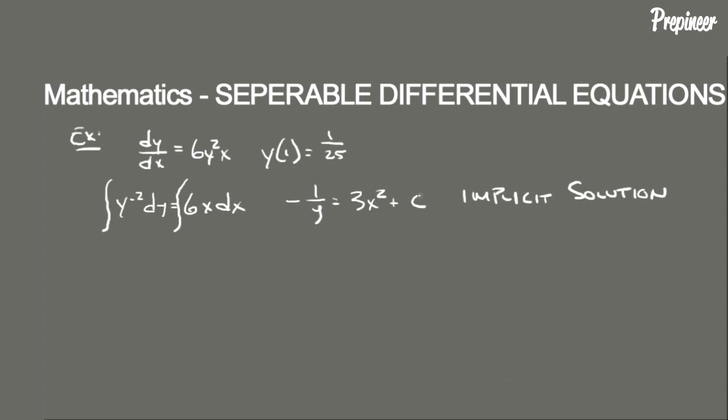Now we can easily determine the explicit solution from here, but before we do so let's use the initial condition to determine what the constant of integration is going to be. So we know that y at 1 equals 1 over 25. All we need to do is plug in these values to determine c. So we got 1 over 1 divided by 25 equals 3 times 1 squared plus c. And just solving that we'll find that c equals negative 28. So our constant of integration is equal to negative 28.